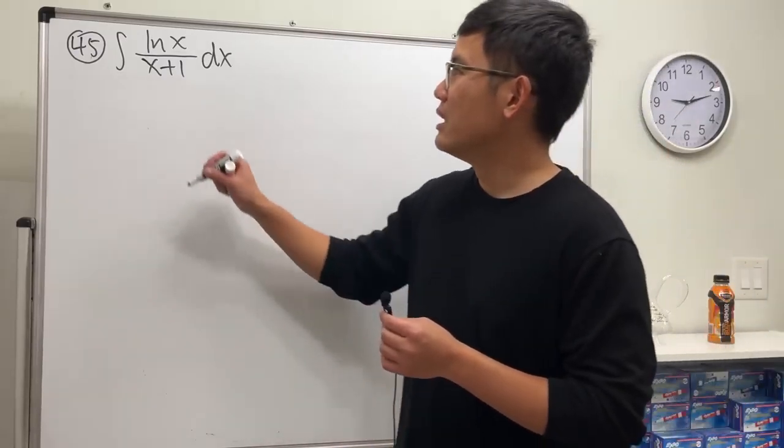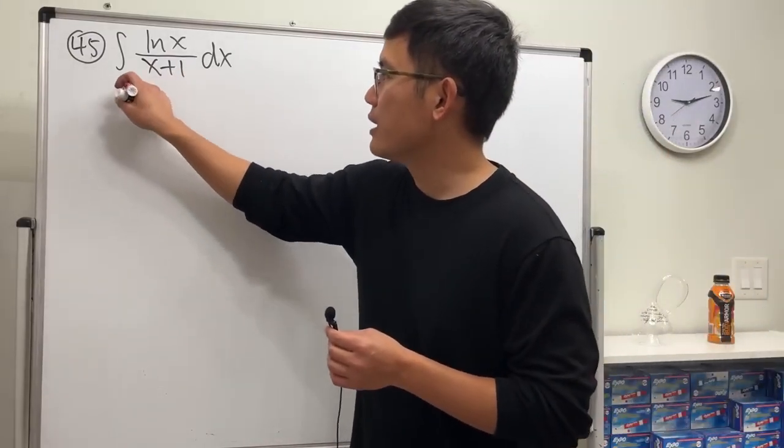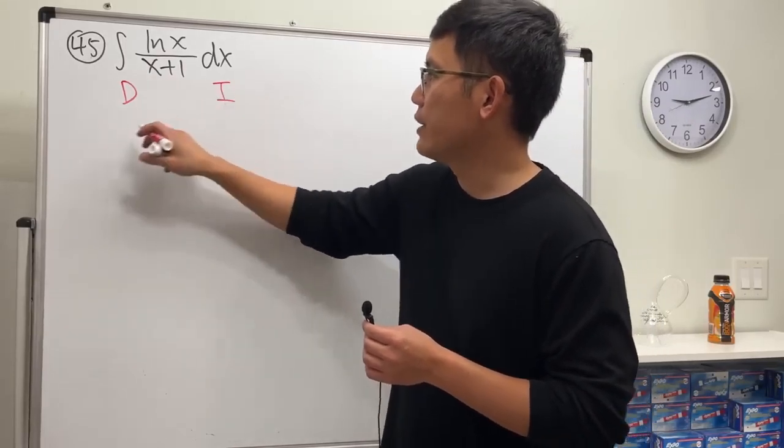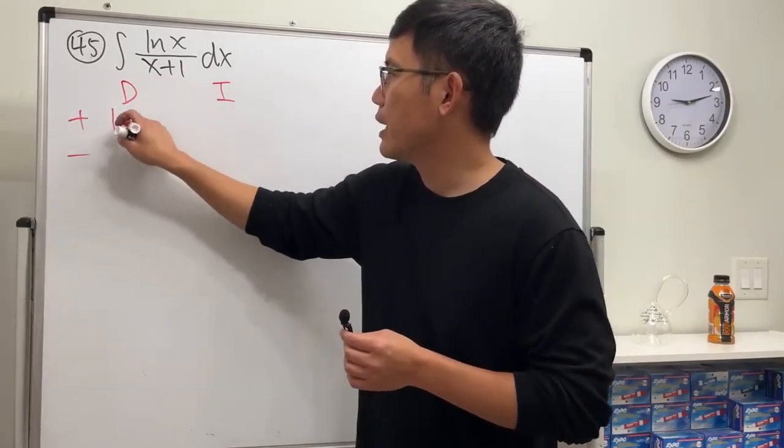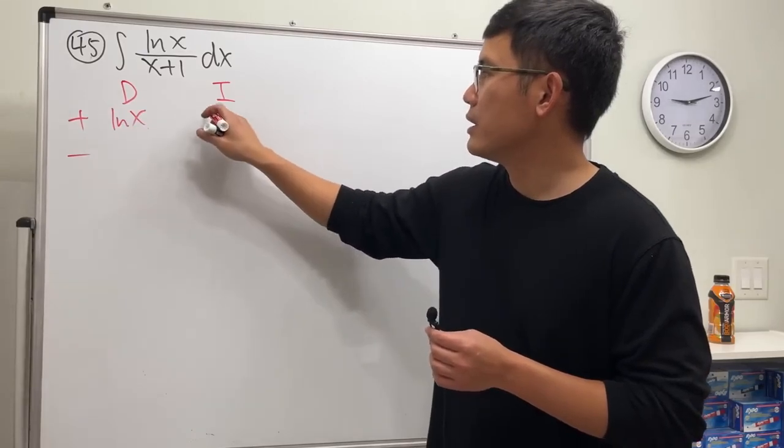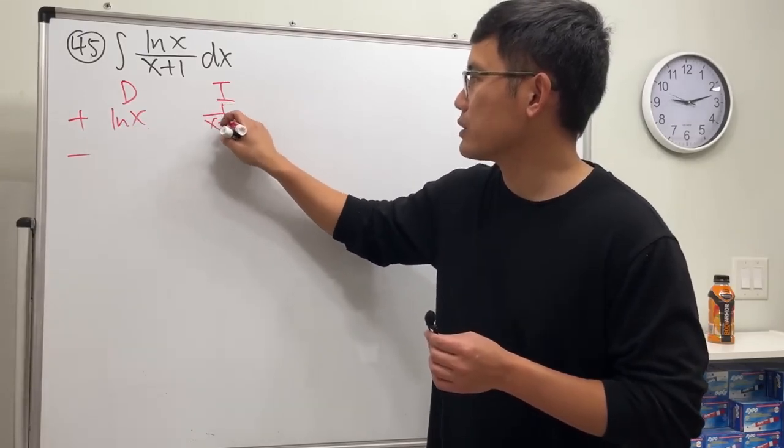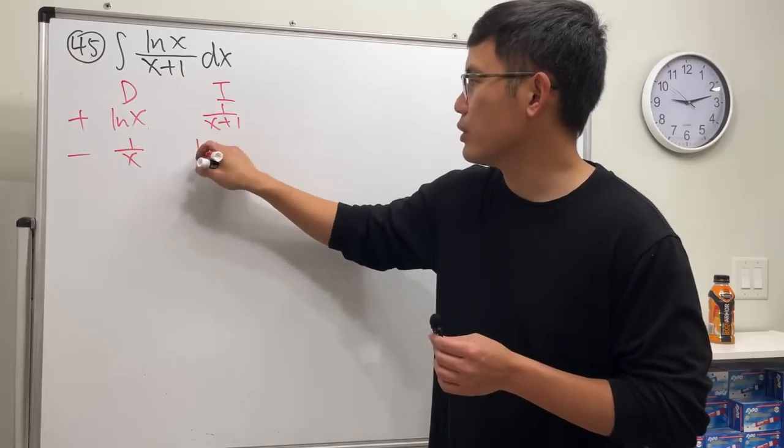Let's try integration by parts. I noticed we can differentiate ln(x) and then integrate 1 over x+1. This is doable. 1 over x, this right here is also doable.